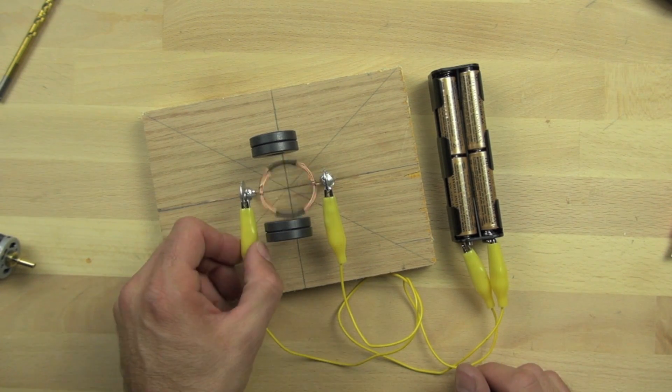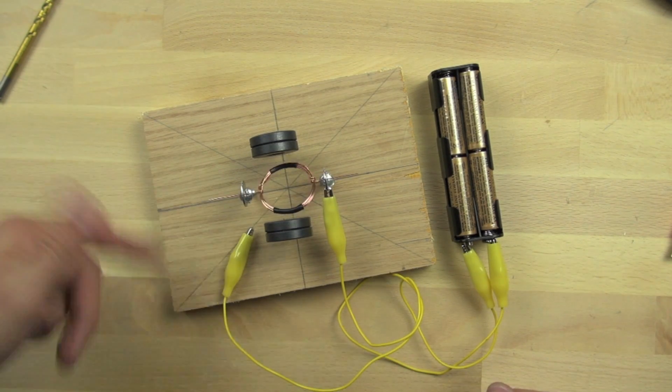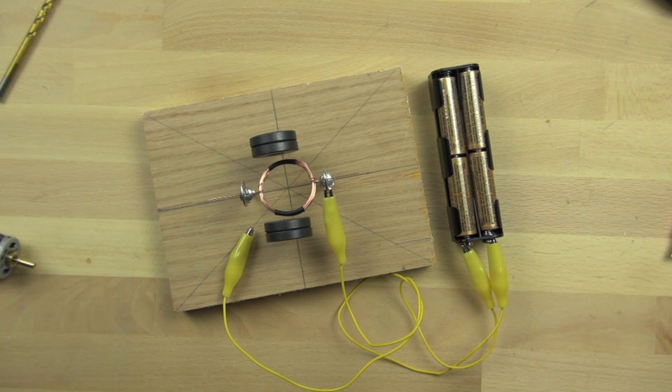Now this coil is just one loop. The motor in our hair dryer had five loops. And so it was called a five pole motor. So now we're going to see if we can use this motor to do some work.